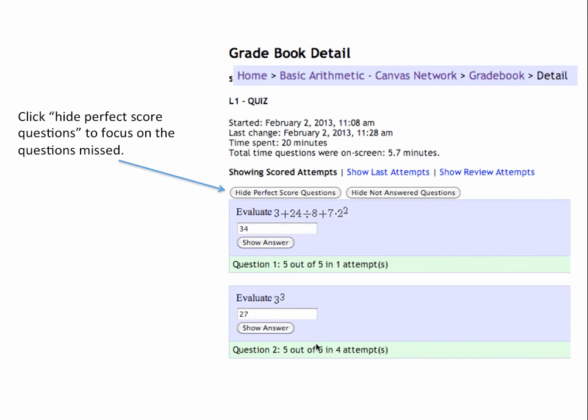Click hide perfect score questions to focus on the questions missed. Click show answer to reveal the answer for a question that you missed.